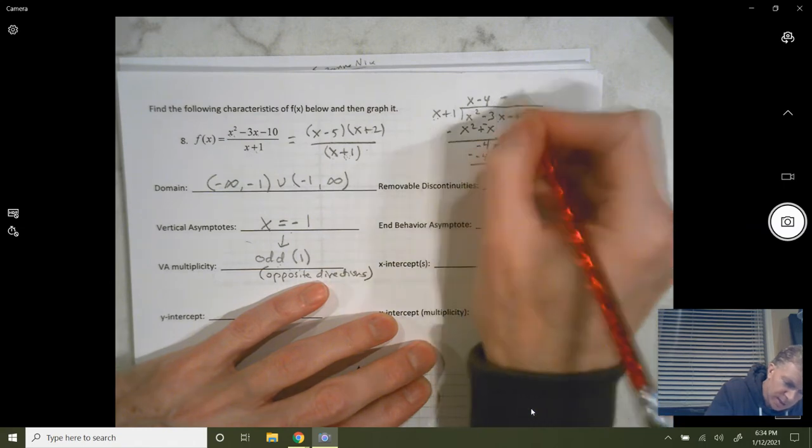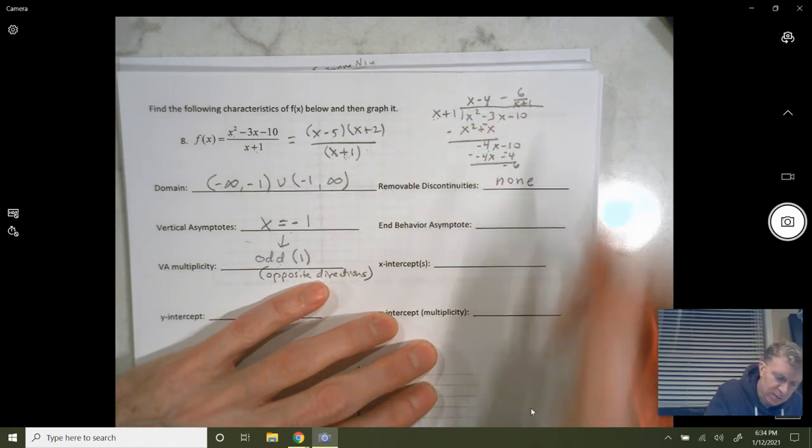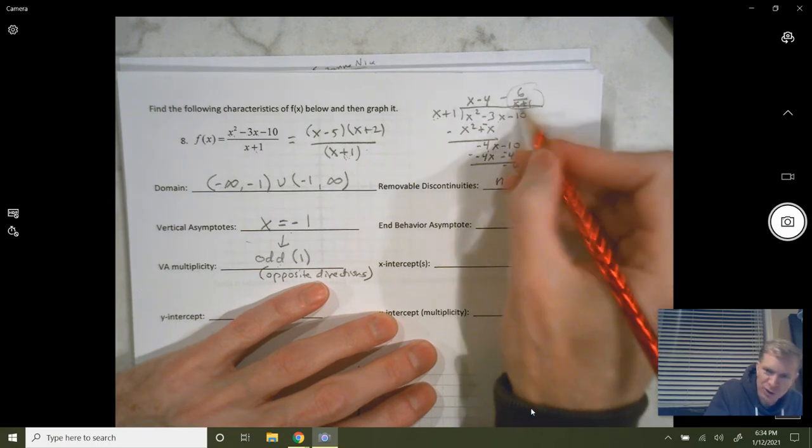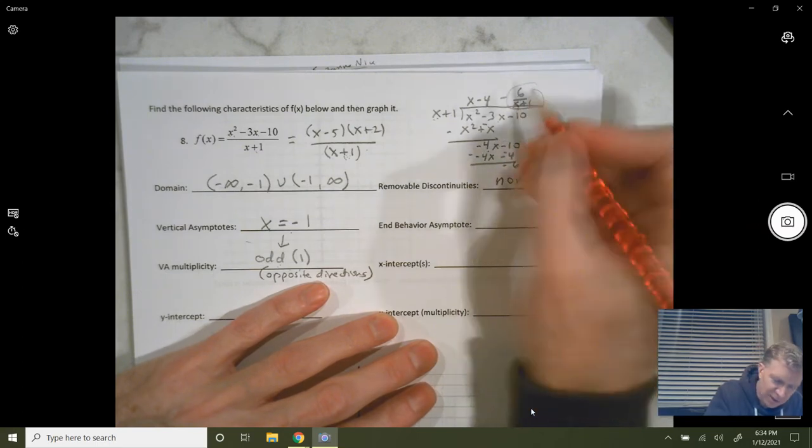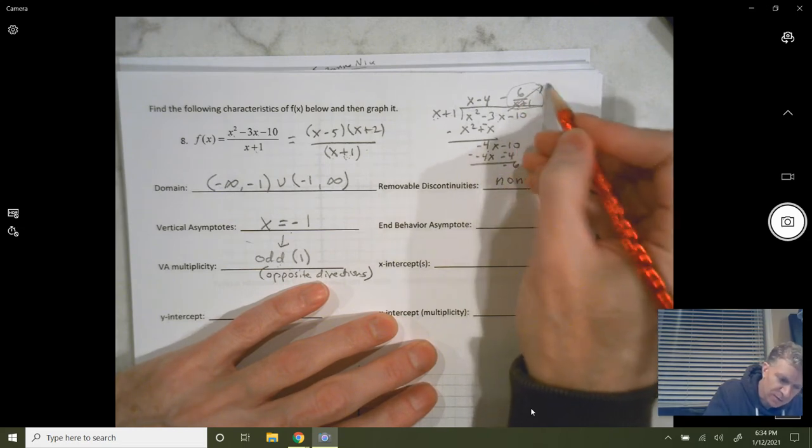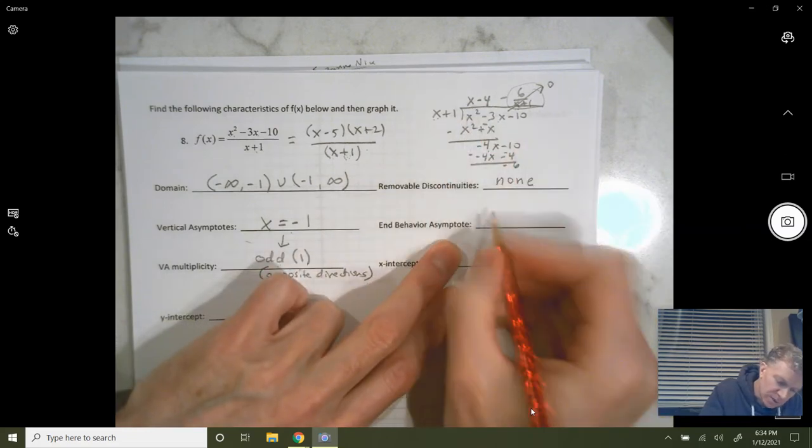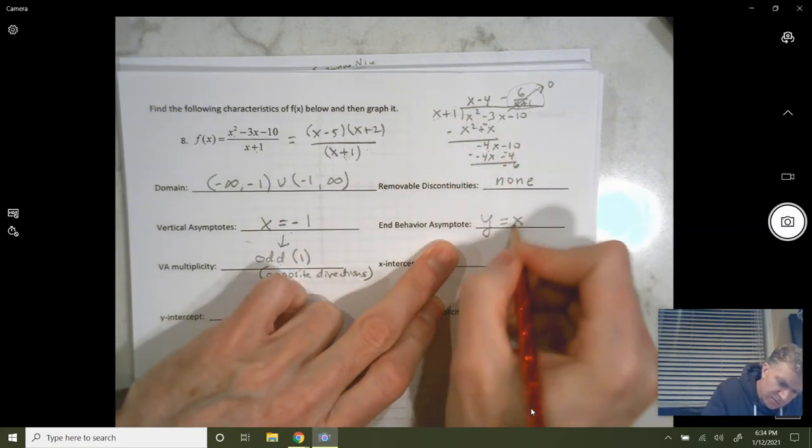x times negative 4 gives you negative 4x, so we get minus 4. Negative 4x, negative 4 times 1 is minus 4. Subtract and subtract, that becomes minus 6. So, minus 6 over x plus 1. Remember, it's an end behavior asymptote. And on the ends, x is going to infinity or negative infinity. When your denominator goes off to infinity, the entire fraction goes off to 0. So, our end behavior asymptote is going to be the line y equals x minus 4.